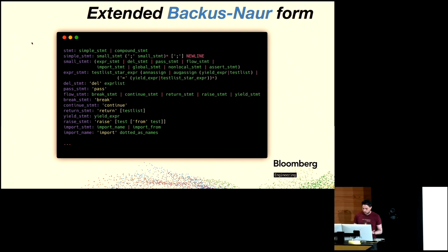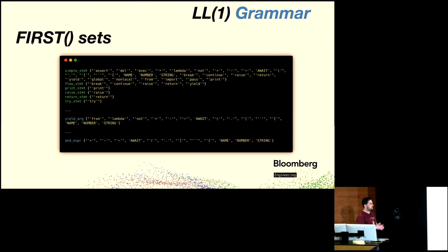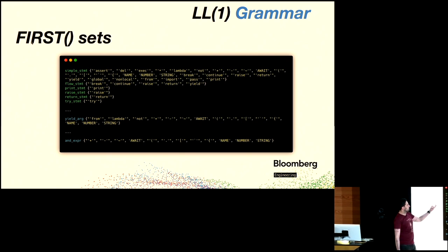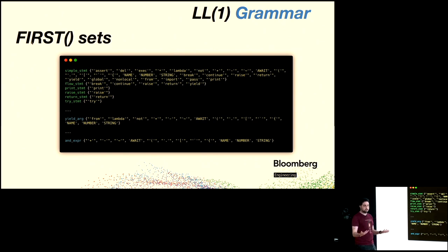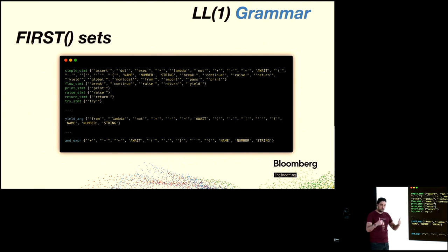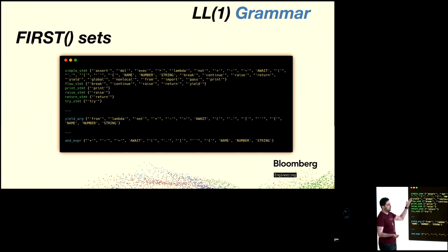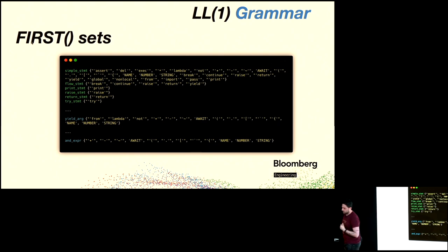The first sets for a rule — for example, simple_statement — are all the terminals the rule can start with. This is very important: if we can only look at the next token, it's essential to know all possible tokens a rule can start with. If we have a token that's in one of these allowed terminals, we know we can proceed. If the token isn't in the first set of that rule, we know it's invalid and can report a syntax error.